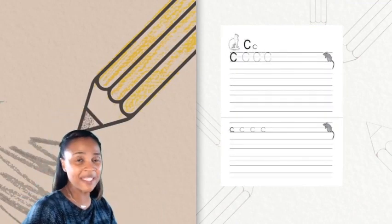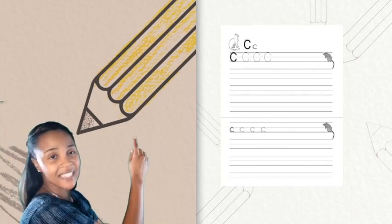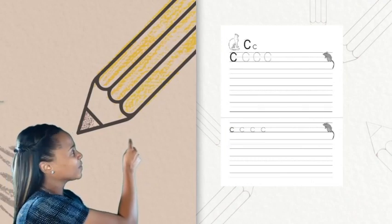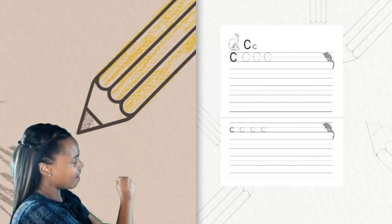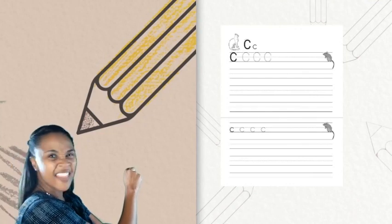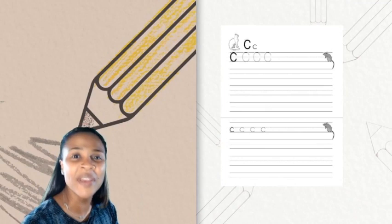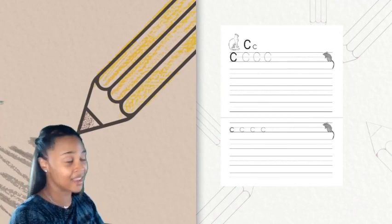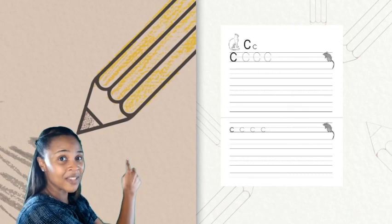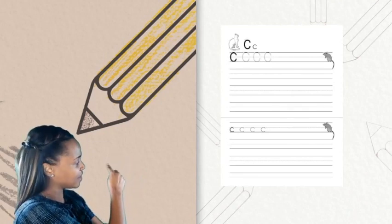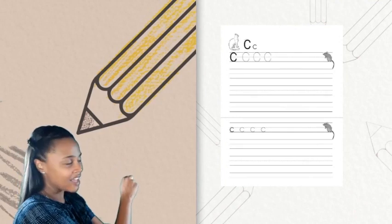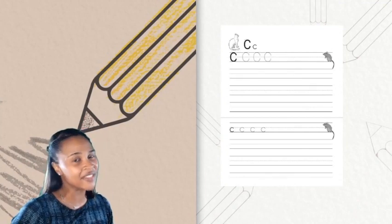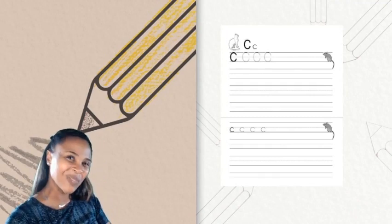Now it's time to make our uppercase C. We're going to take our pencil and put it a little bit under the headline at the top, and we're going to come around and curve to the left all the way around to the bottom line — the foot line — and then come up just a little bit. And we've just made our uppercase C. Now we're going to make our lowercase C. We're going to put our pencil in the middle on the belly line, and come around making another curve around to the foot line, and then coming back up just a little bit to curve our letter C. And we've just made our lowercase C. Nice work with your handwriting.